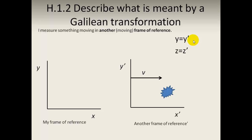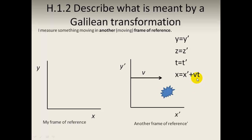The same applies for T — the event happens at the same time. There is a little difference in terms of the distance along the X axis, because his frame is moving to the right. His value of X, as far as I can see, is changing all the time. It's going to be equal to his value of X prime plus the distance that it travels away from me, which is velocity times time. So X equals X prime plus VT. This is a Galilean transformation — how I measure something in another moving frame of reference.